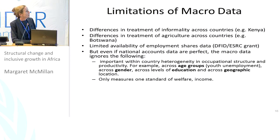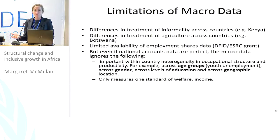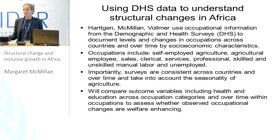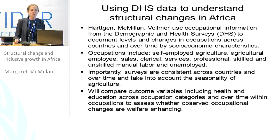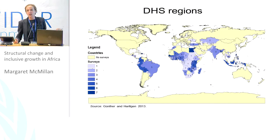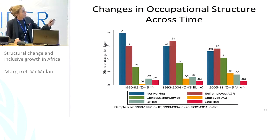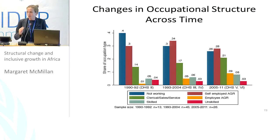Even if national accounts data were perfect, the macro data ignore important within-country heterogeneity across age groups, gender, education, and geographic location. National income accounts also only measure one standard of welfare — income or consumption. So what we're doing now, the most exciting part, is using the demographic and health surveys to learn what we can about structural change in Africa. One of the nicest things about the DHS data is that almost all of sub-Saharan Africa is covered at least once, and several countries are covered twice.